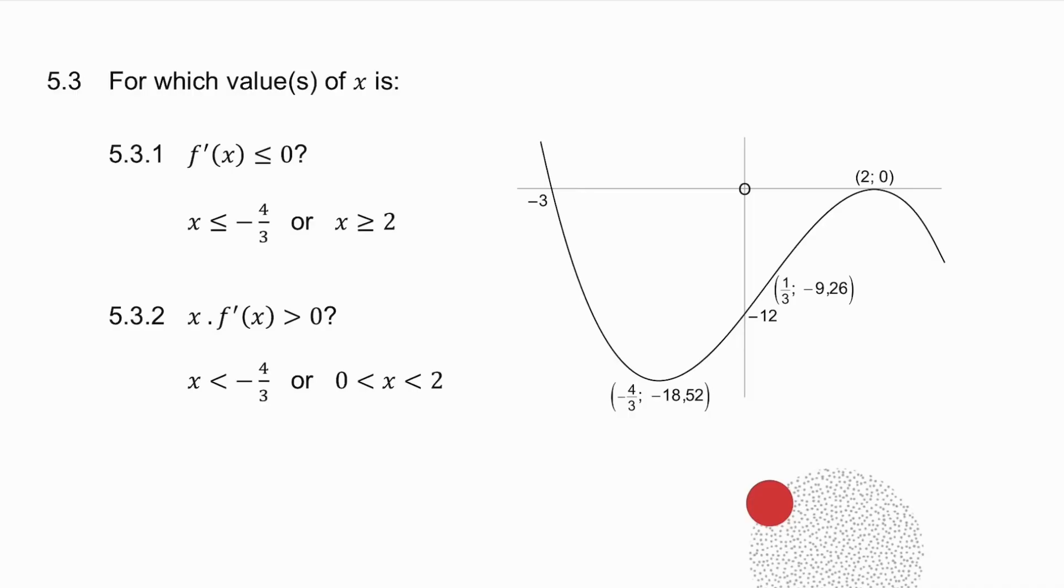Now, 5.3.2 asks you where is x times the derivative greater than 0. Now, if you want to get a positive answer, you know to take a plus times a plus or a minus times a minus. So what I want to know is where is x positive and the derivative positive, or where is x negative and the derivative negative?